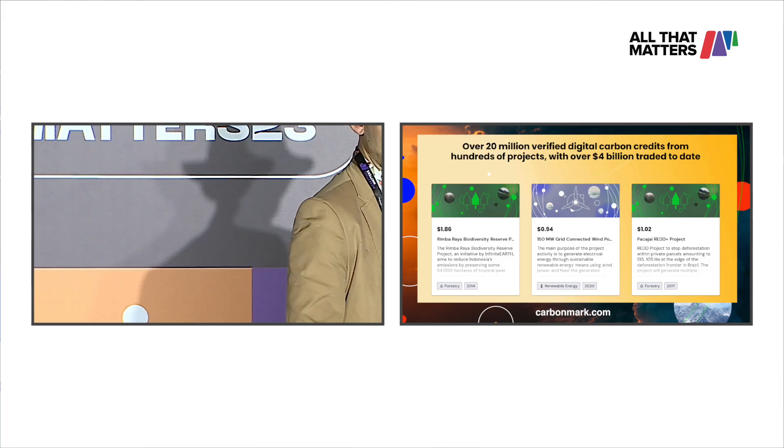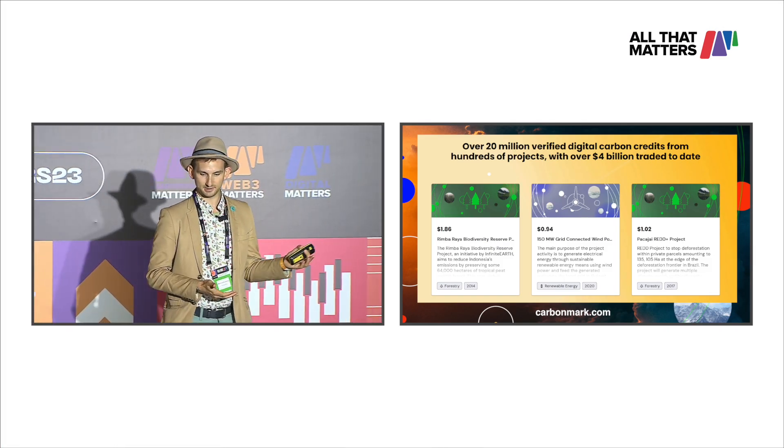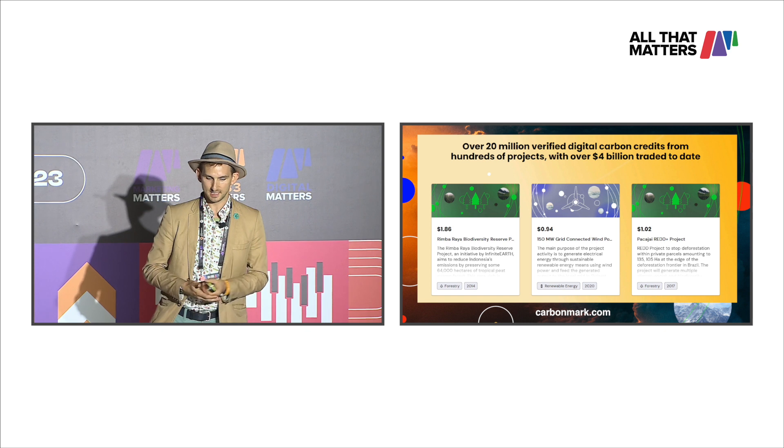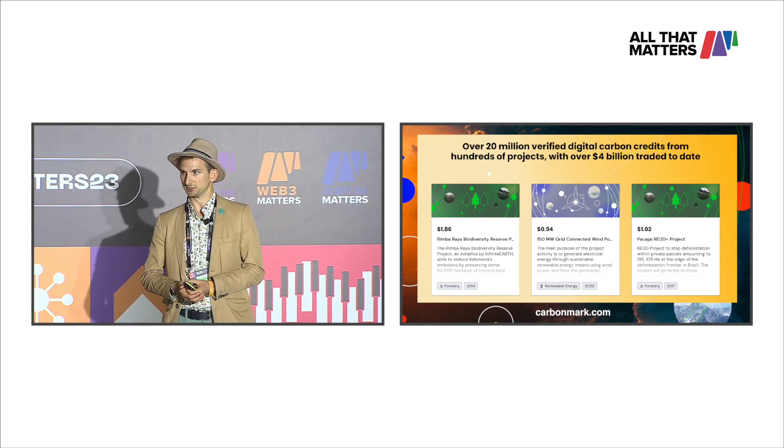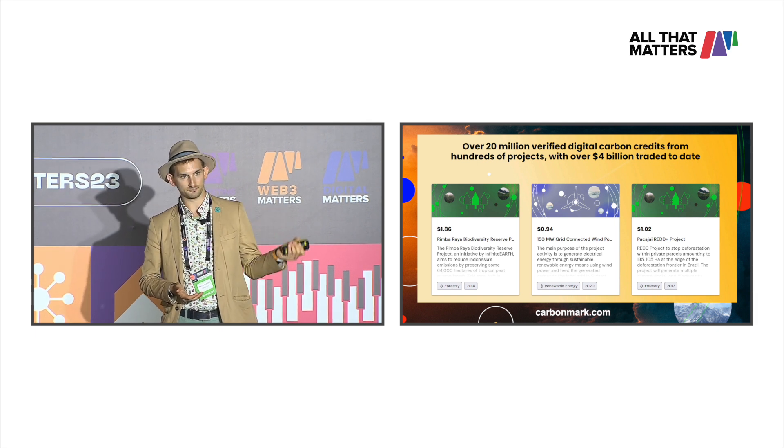As an example, we built a product called CarbonMark — the Web3 universal carbon marketplace on blockchain. You can go on there today: we've got 20 million credits from 180 different projects, we've traded over 4 billion in volume to date. These projects all currently come from the Verra registry, but we're in the process of onboarding additional projects from Web3 native registries as well. That's the concept of disintermediation — directly connecting supply with demand, lowering fees, and getting greater transparency and access.